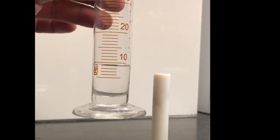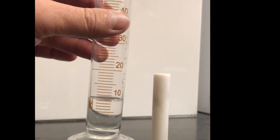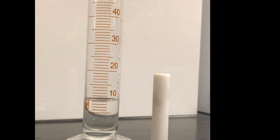So we always read from the bottom of the meniscus, and you can see in this case that we've got nine milliliters. So the volume of the cylinder would be nine milliliters.